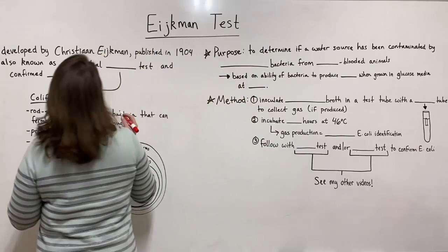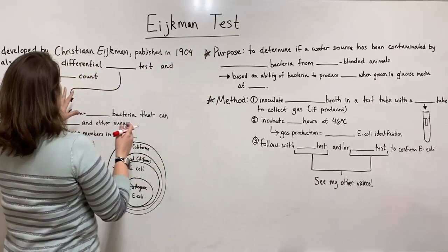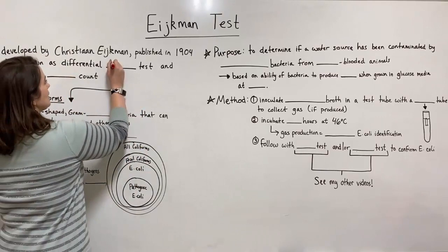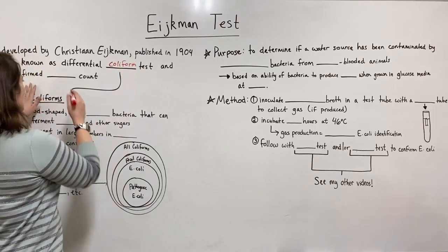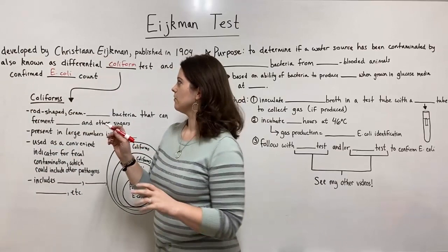Specifically with the Eijkman test, which really has nothing to do with vitamins, it has two other names by which it's known. One is the differential coliform test, and it's also known as the confirmed E. coli test or the confirmed E. coli count test.